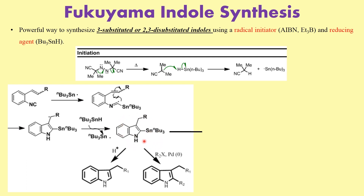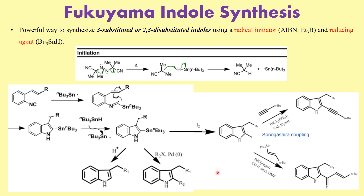Now you can do two things here. Once you have this particular substrate, if you only want a three-substituted indole, you can simply add acid to the reaction. This cleaves the carbon-tin bond, and you end up getting the three-substituted indole. But if you want to carry out a Stille coupling reaction at C2, you can add the respective palladide in the presence of a palladium catalyst to carry out the Stille coupling reaction.